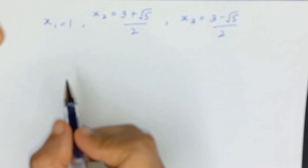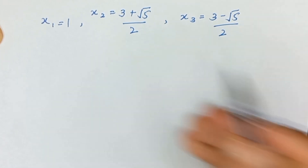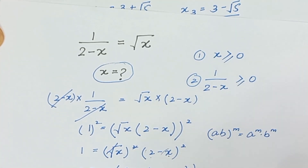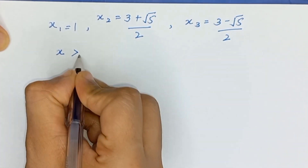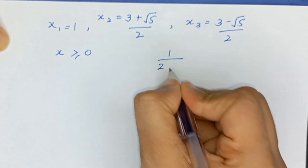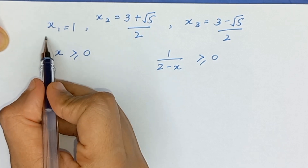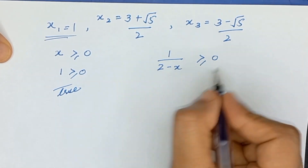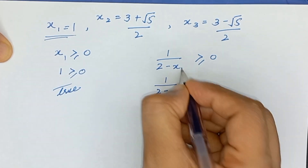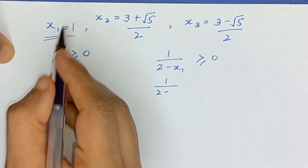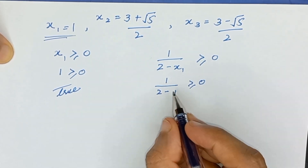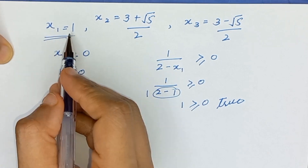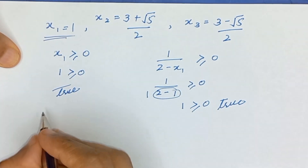Now let's verify these values using our two conditions: x greater than or equal to 0, and 1 divided by 2 minus x greater than or equal to 0. For x1 equals 1: 1 is greater than or equal to 0 — true. And 1 divided by (2 minus 1) equals 1 divided by 1 equals 1, which is greater than or equal to 0 — true. So x1 equals 1 is a solution.